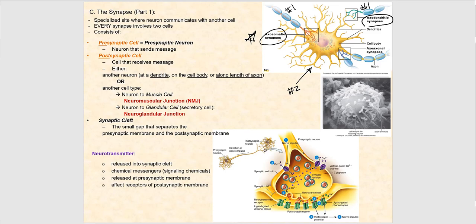The third neuron-to-neuron synapse is axoaxonal, also referred to as axoaxonic. The axon of the presynaptic neuron synapses at the axon of the postsynaptic neuron — it's hard to see but it's there. That's why this is called an axoaxonal or axoaxonic synapse.